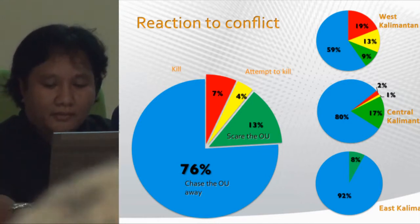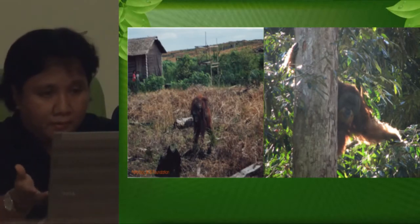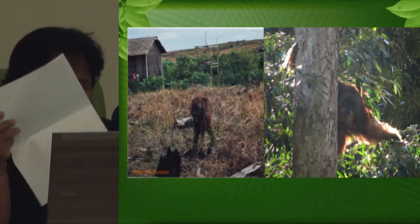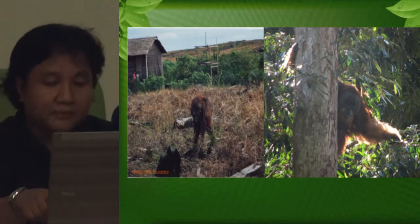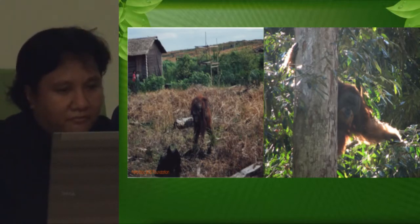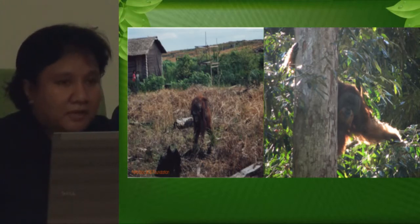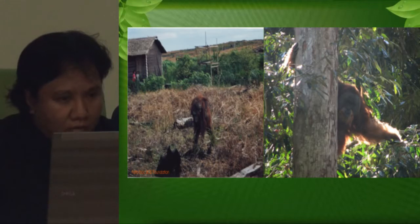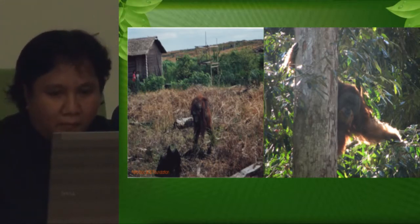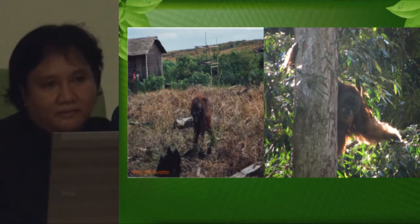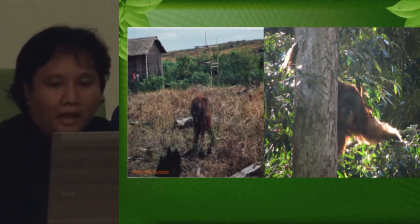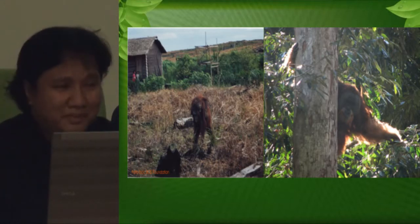These photos illustrate habitat overlap. One shows a female orangutan with a baby wandering into a human settlement near an oil palm plantation looking for food. Another shows a Sumatran orangutan after eating durian inside a human settlement. I don't think any of you would want to encounter either of these situations.